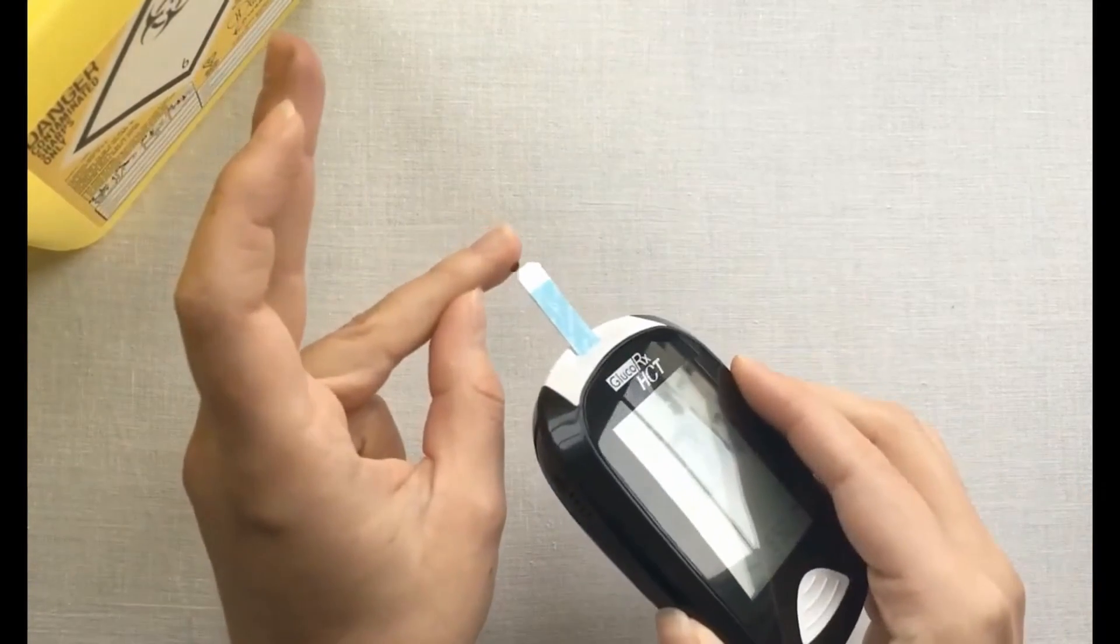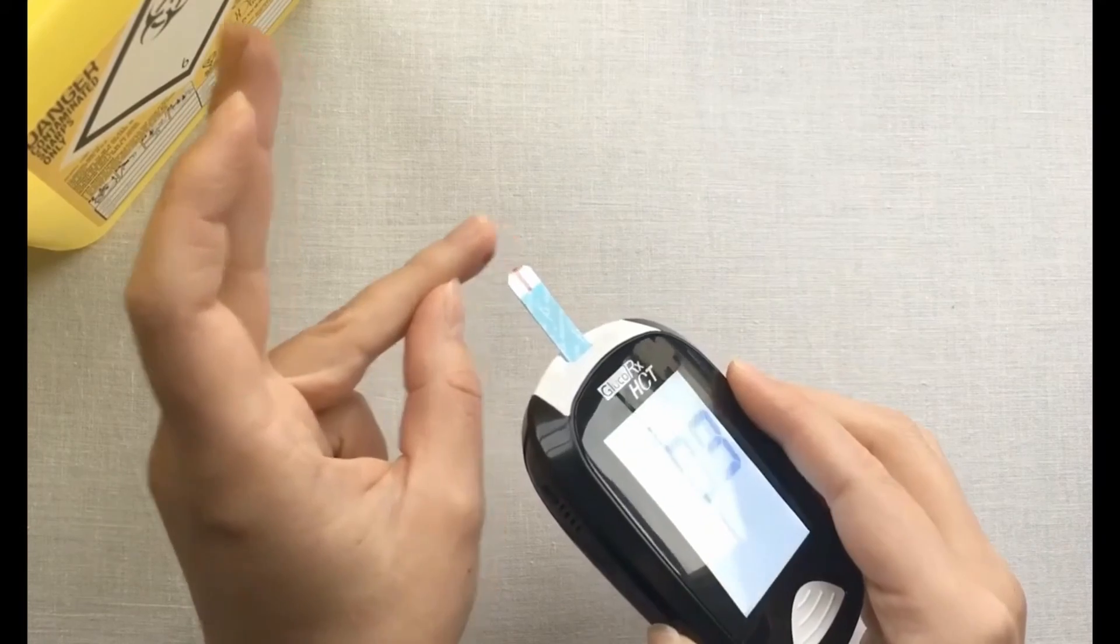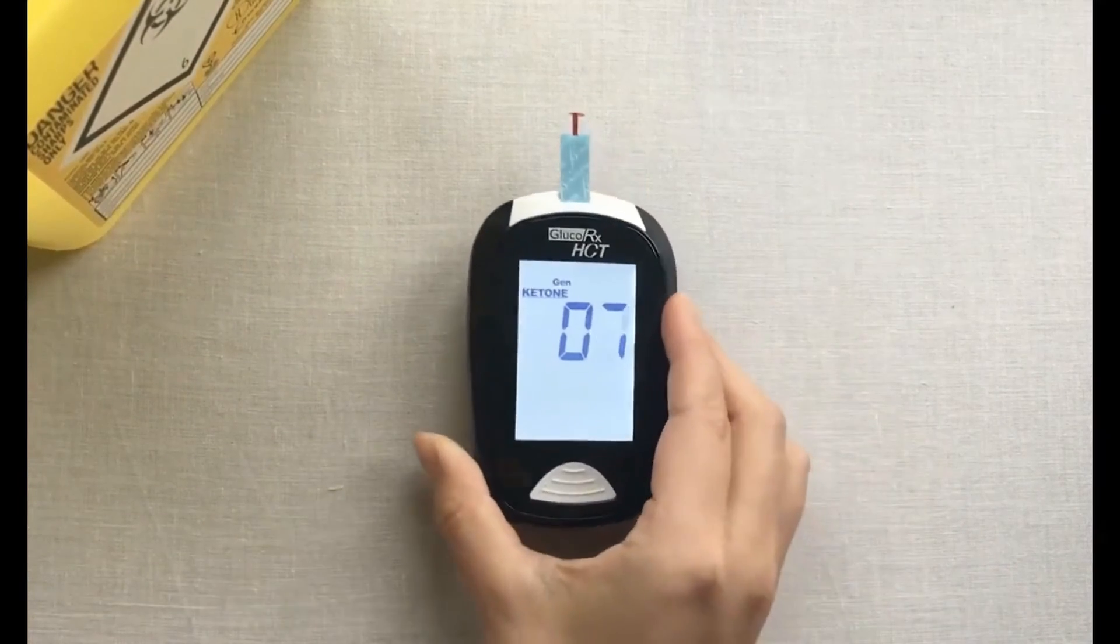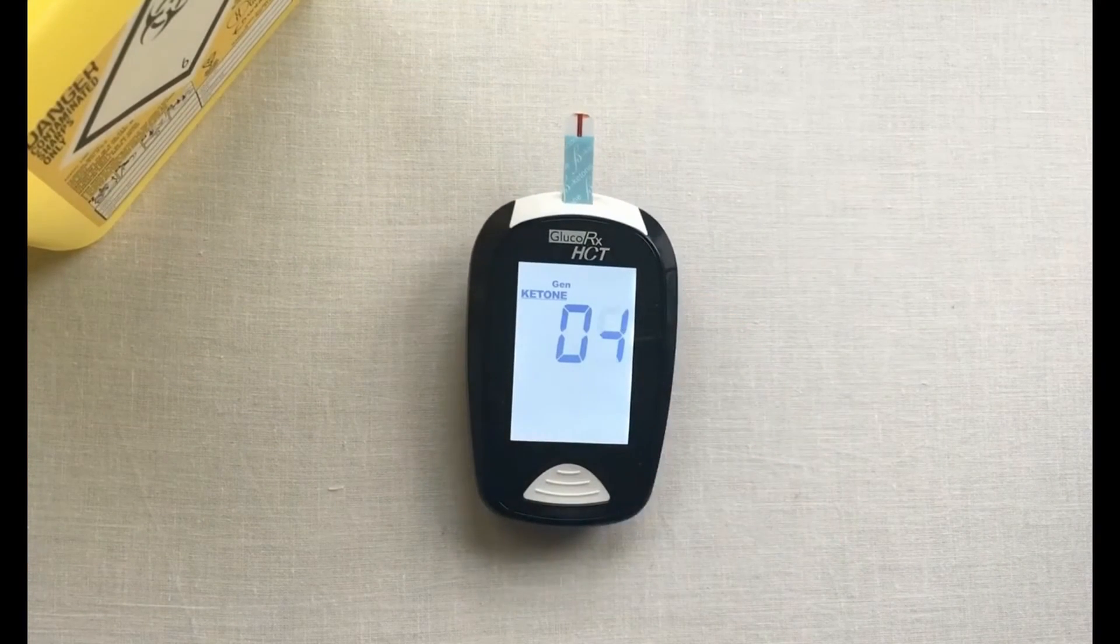Hold the meter and bring the test strip to the blood droplet so it touches. It automatically sucks up the blood into the strip. Your meter will begin to count down from 10 to 0.